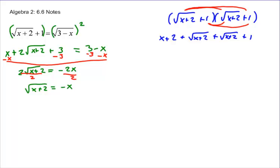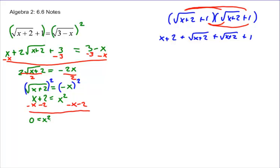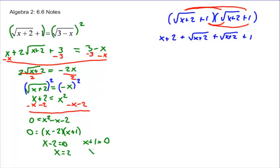Now, to get rid of this remaining radical, we square both sides again. Squaring gives x plus 2 equals x squared. Moving everything to one side: 0 equals x squared minus x minus 2. Factoring gives (x−2)(x+1) equals 0, so x equals 2 or x equals negative 1. You have to check both of these.